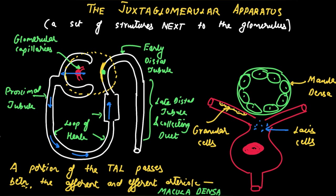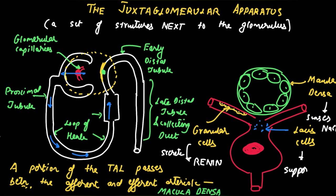The macula densa senses NaCl levels in the tubular fluid — it is a NaCl sensor. The granular cells secrete renin. Finally, there are extraglomerular mesangial cells, the lacis cells, which are supporting cells.